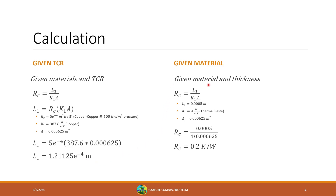The second case is where you're given a thermal interface material — such as a thermal paste — that sits between your two main solids, possibly to improve thermal conductivity. In this case, we already have what we need for Fluent: the thickness and the thermal conductivity of that material. For completeness, we can calculate the expected thermal contact resistance using RC = L1 / (K1 × A). Plugging in a length of 0.0005 m, a thermal conductivity of 4 W/(m·K) for a standard thermal paste, and the contact area, we get an expected thermal contact resistance of about 0.2 K/W.